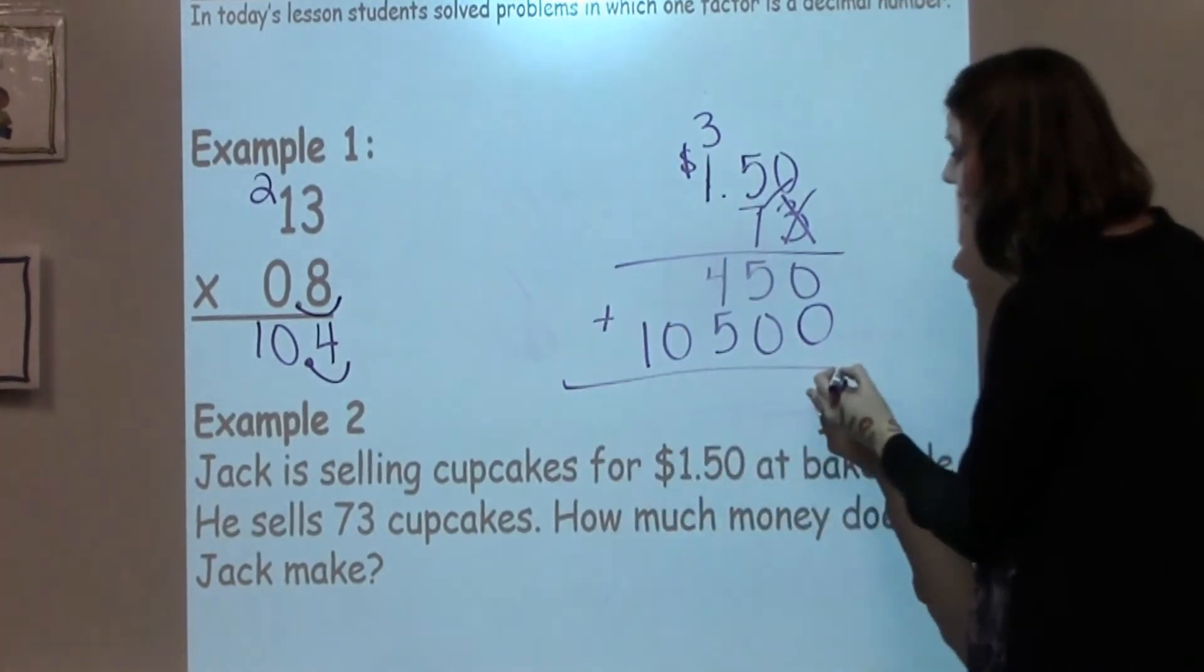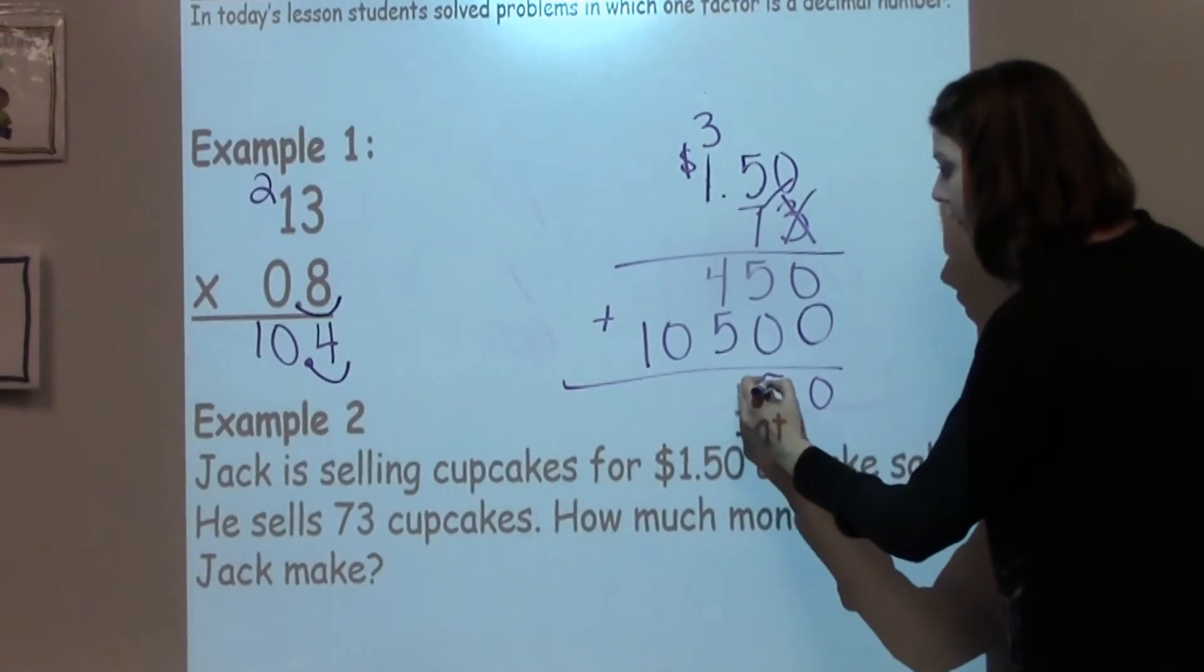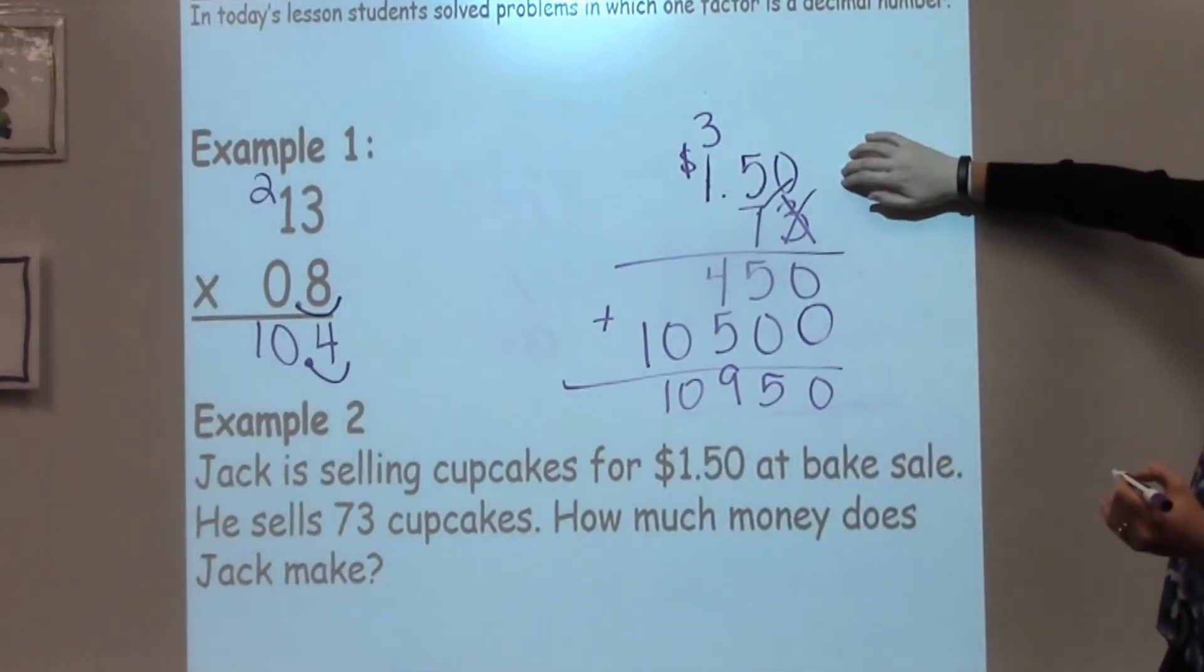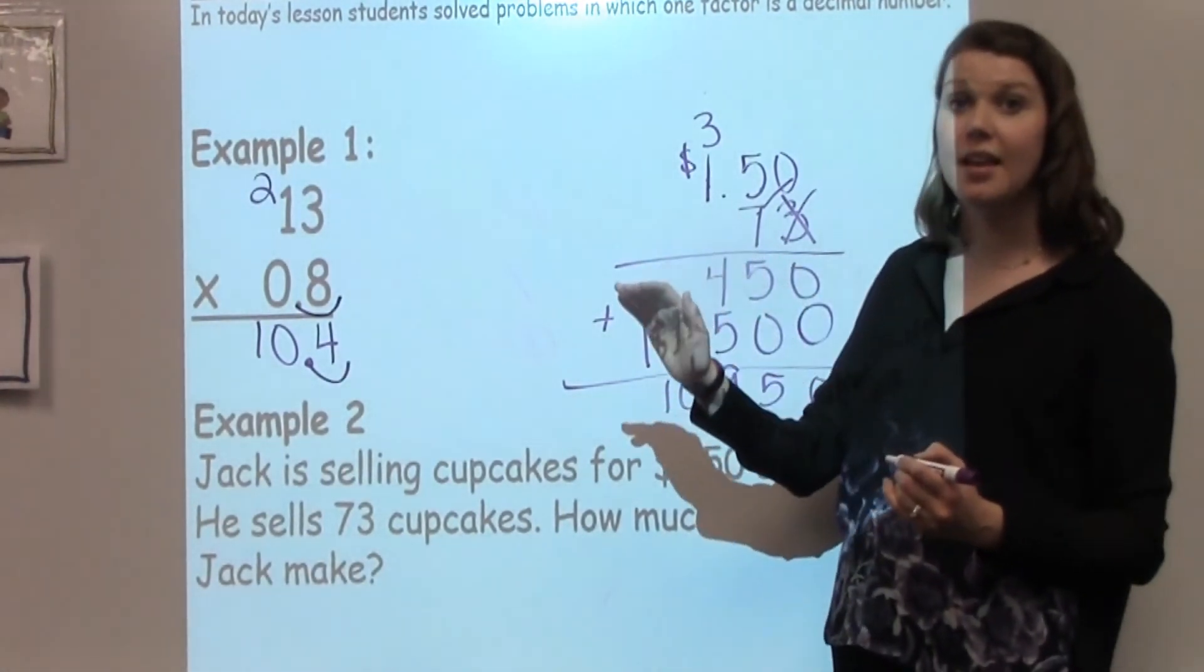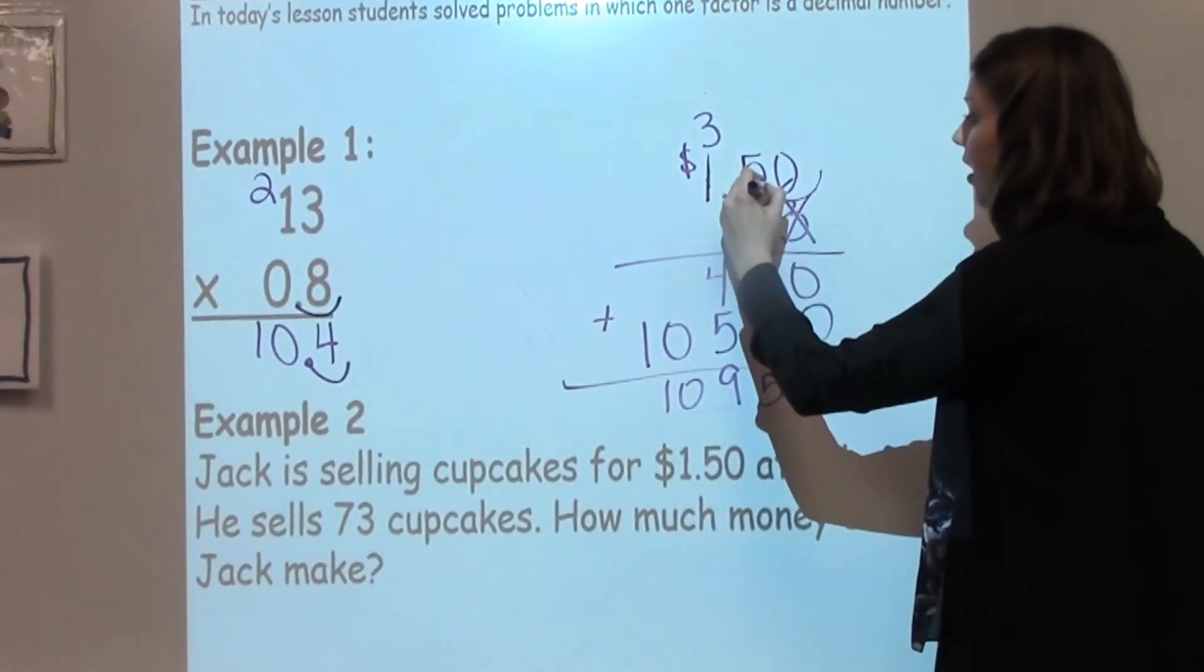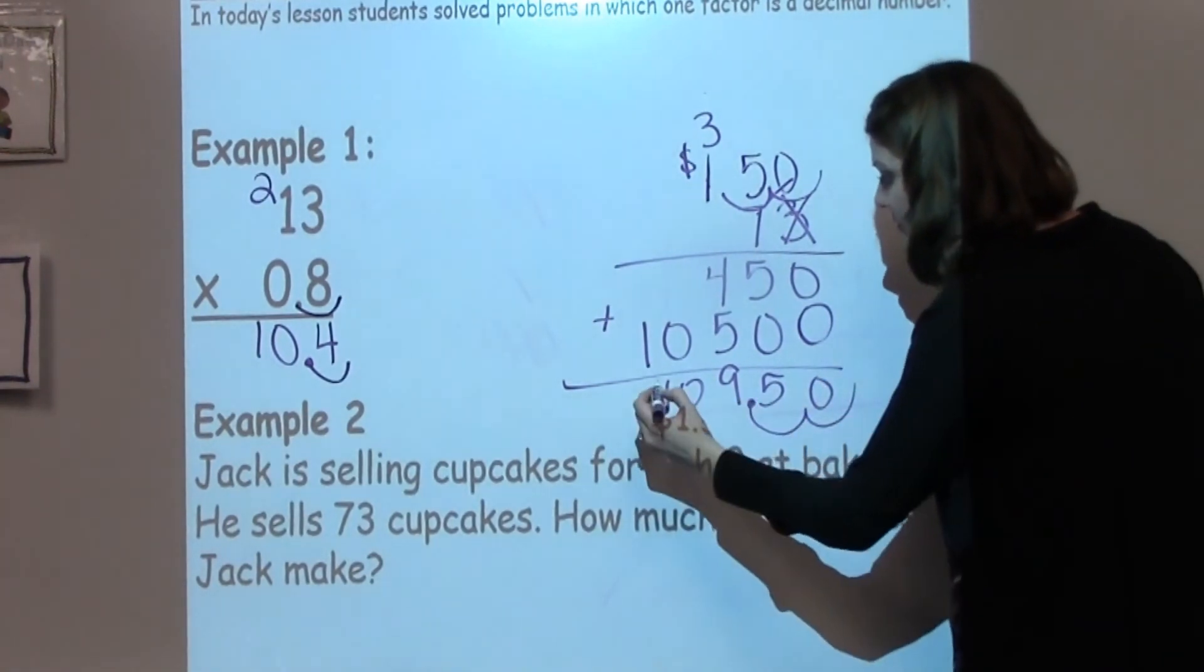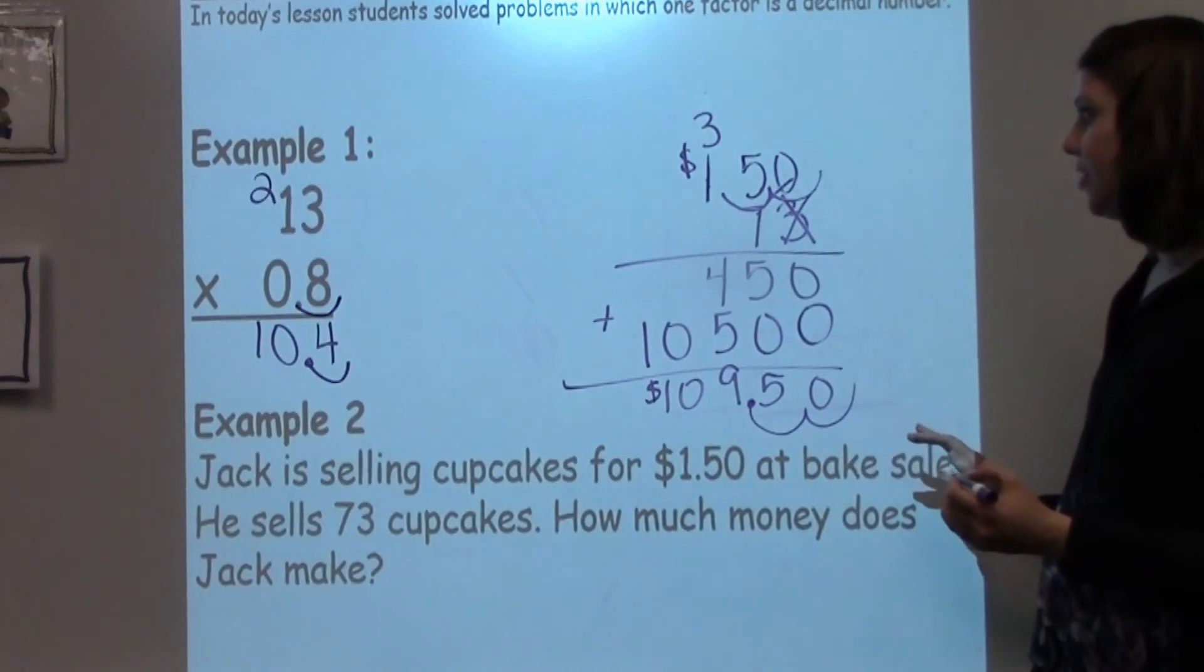Now, I need to simply add these numbers up. Okay, and I need to go back into my problem because I've ignored the decimal up until this point, but I need to go back and put it back in. I'm going to hop over 1, 2 spots, 1, 2 spots. So, Jack is going to make $109.50.